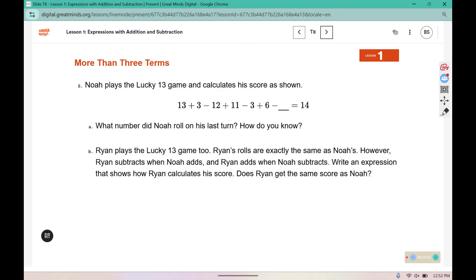Noah plays the Lucky 13 game and calculates his score as shown. What number did Noah roll on his last turn, and how do you know? Well, let's do the math that he had so far. 13 plus 3 would be 16. 16 minus 12 would be 4. 4 plus 11 would be 15. 15 minus 3 would be 12. 12 plus 6 is 18. We knew that the answer to his previous rolls was 18.